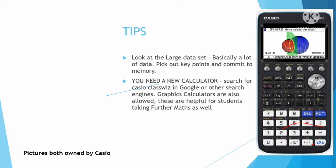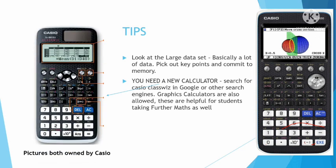You'll also need a new calculator — search for the Casio ClassWiz in Google or other search engines. Graphical calculators are also allowed in the exams and are recommended if you're doing A-level further maths, as they can be very useful — though they are expensive. Both calculators shown are made by Casio.